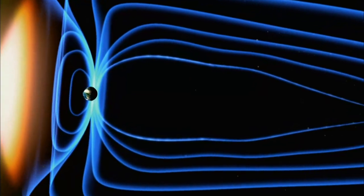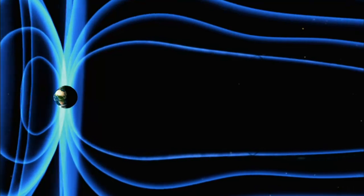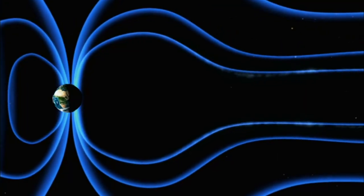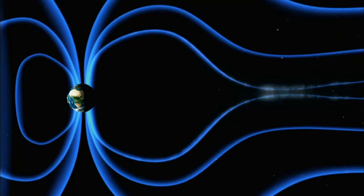Some of the charged particles of the solar wind collect in the stretched-out tail. Like a slingshot, the energy builds up in the tail until it has to be released.